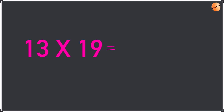With this, firstly we are going to multiply the second digit of both the numbers. So we are going to do 3 times 9, which is going to be 27. Write the 7 and take the 2 as a remainder.